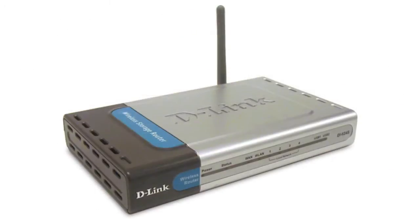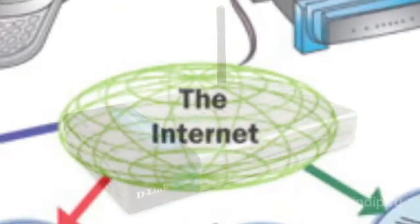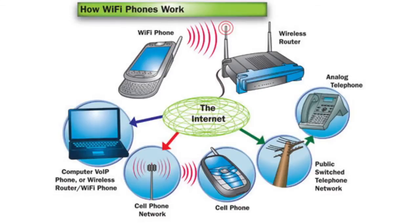As a rule, the Wi-Fi network circuit comprises at least one access point and one client. Two clients may be connected in the point-to-point regimen. In this case, the clients are connected by the network adapters directly without using the access point.